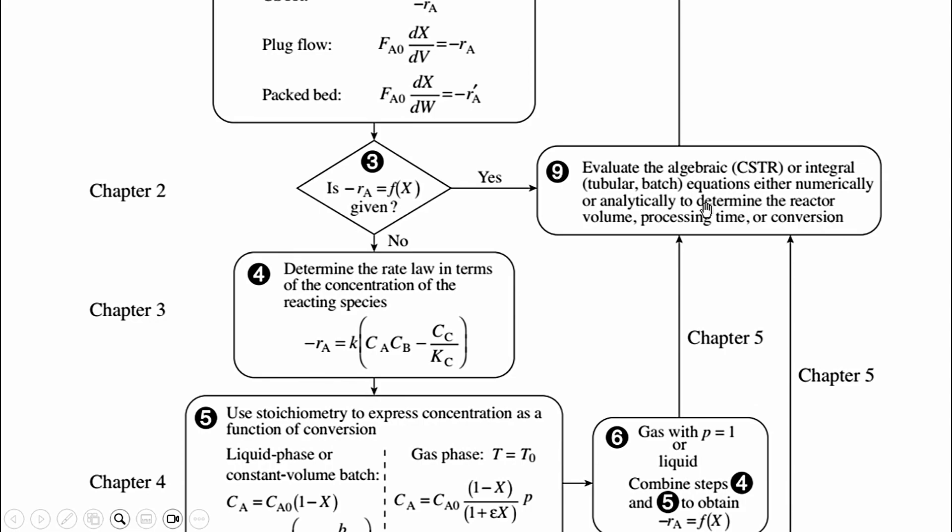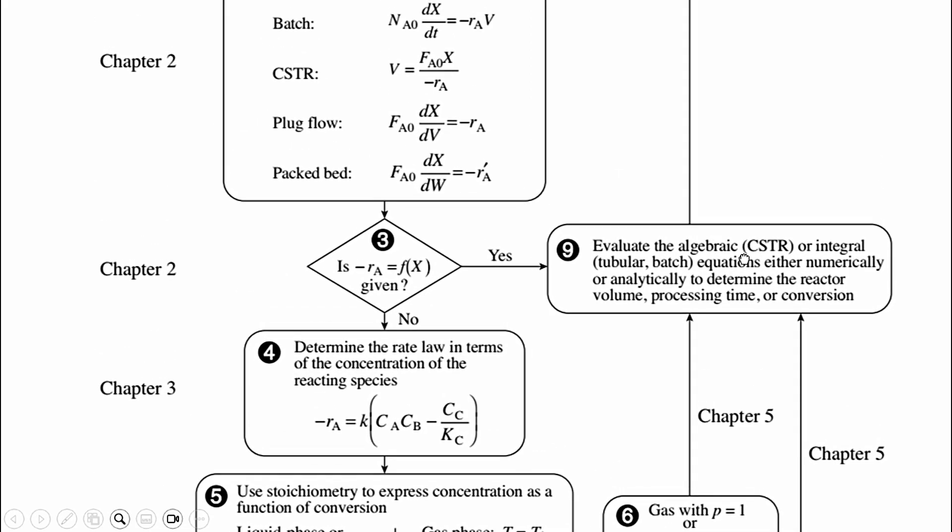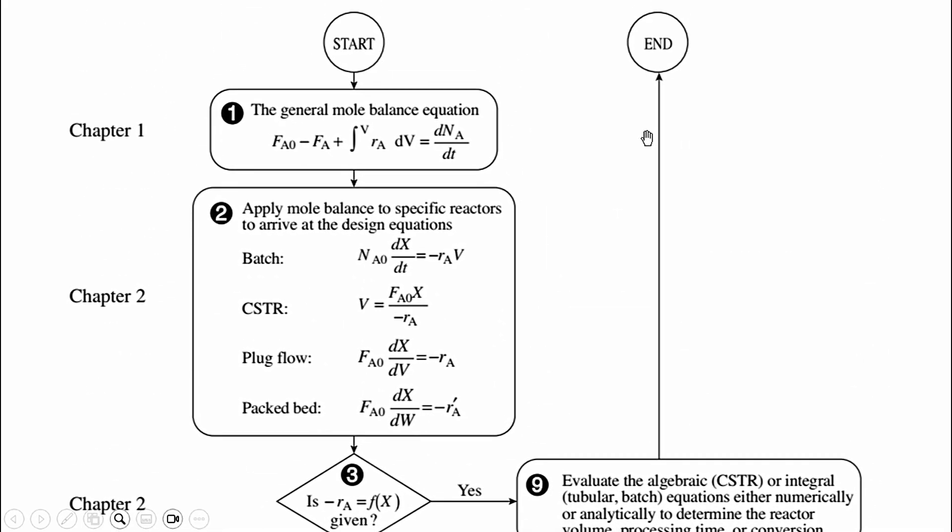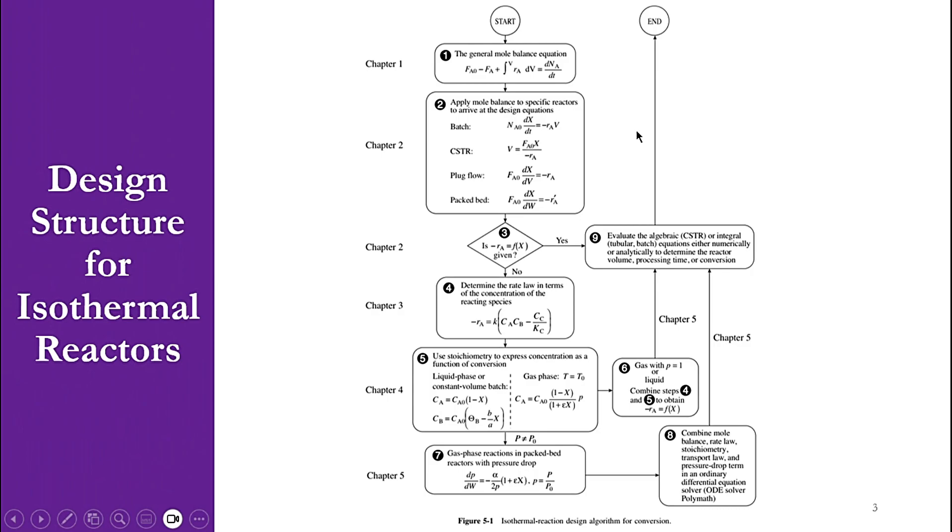So if you see, all of these are going to step number nine. If you have minus RA as a function of X, directly go to step number nine. If it is not available, combine four and five to get six if there is no pressure drop. If there is a pressure drop in the system, combine all these to get step number eight and then move to step number nine. What is step number nine? It evaluates the algebraic CSTR or integral equations either numerically or analytically to determine reactor volume, processing time, or conversion.